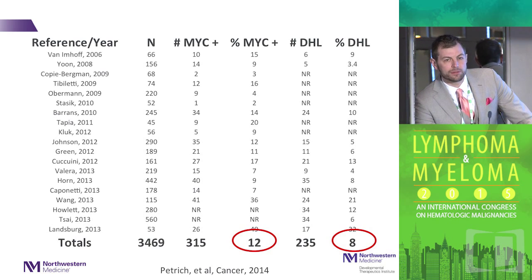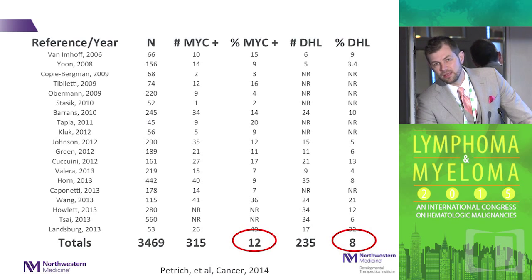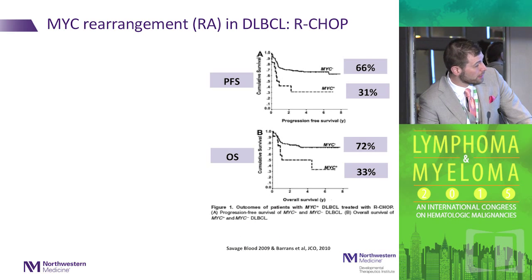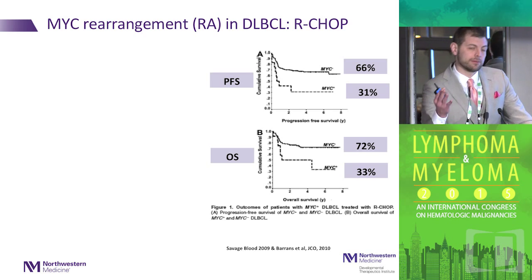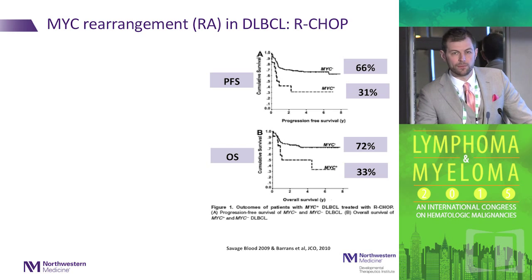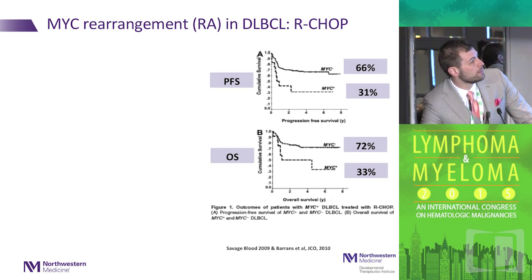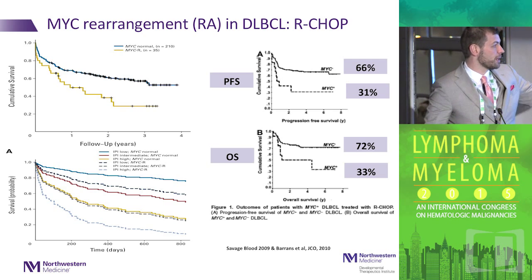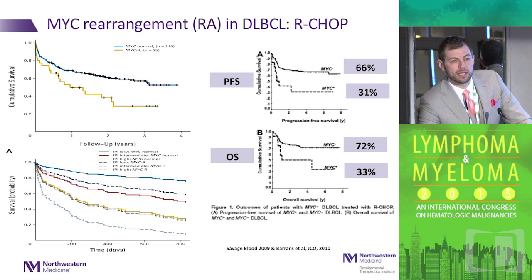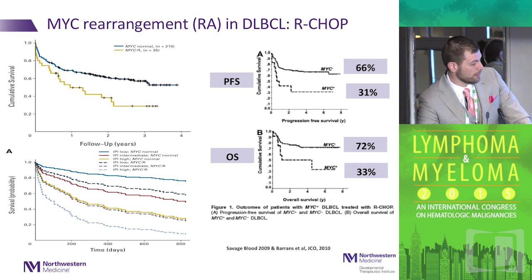An important take-home is that most papers show that once you have a MYC rearrangement, you're more likely than not to have that second insult — a BCL2 rearrangement — so most patients with MYC rearrangements are actually double hits. If we take a step back and start with MYC rearrangement alone, we know it has an impact on progression-free and overall survival in patients treated with R-CHOP, and this comes from several different papers. MYC rearrangement gives you a worse prognosis in diffuse large B-cell lymphoma irrespective of IPI risk stratification.